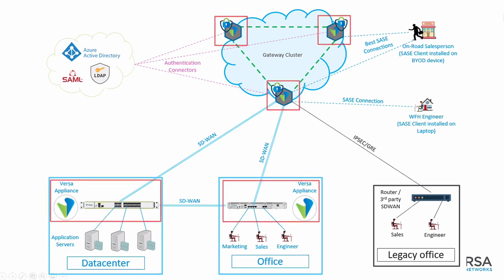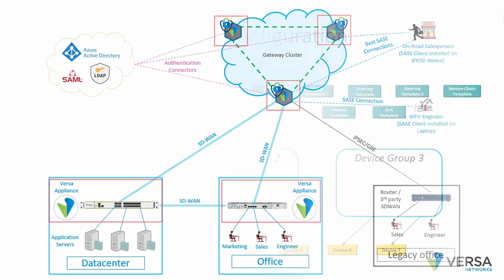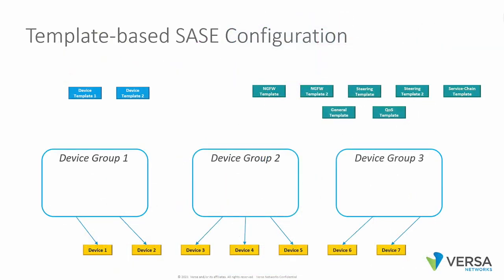What does this unification of the operating system give us? Let's review in a little more detail the template structure which Versa Networks has. First of all, we have a construct called device groups. Device groups can contain from one to maybe hundreds of devices, and a device group can also contain multiple templates.